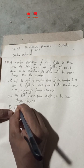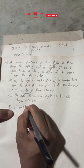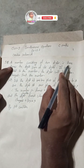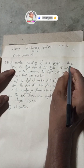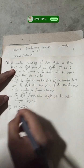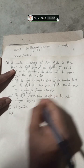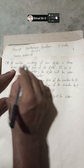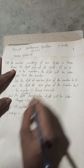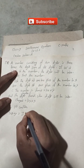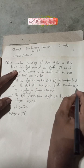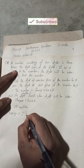By the first condition: a number consisting of two digits is three times the sum of its digits. So the two-digit number 10x + y is equal to three times the sum of the digits.